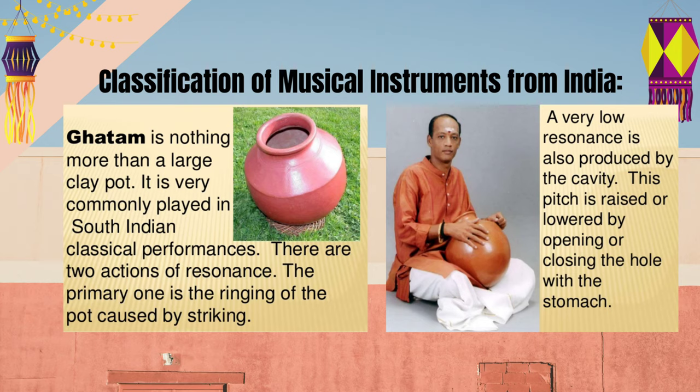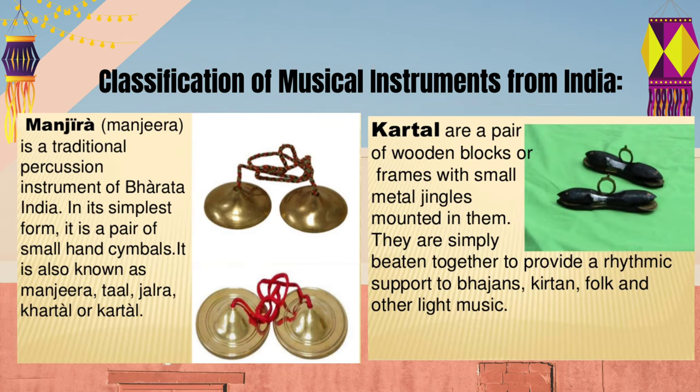The Ghatam has two actions of resonance: the primary one is the ringing of the pot caused by striking, and a very low resonance is produced by the cavity. This pitch is raised or lowered by opening or closing the hole with the stomach. Mangira is a traditional percussion instrument of India. In its simplest form, it is a pair of small hand cymbals, also known as Mangira, Tal, Jalra, or Kartal.